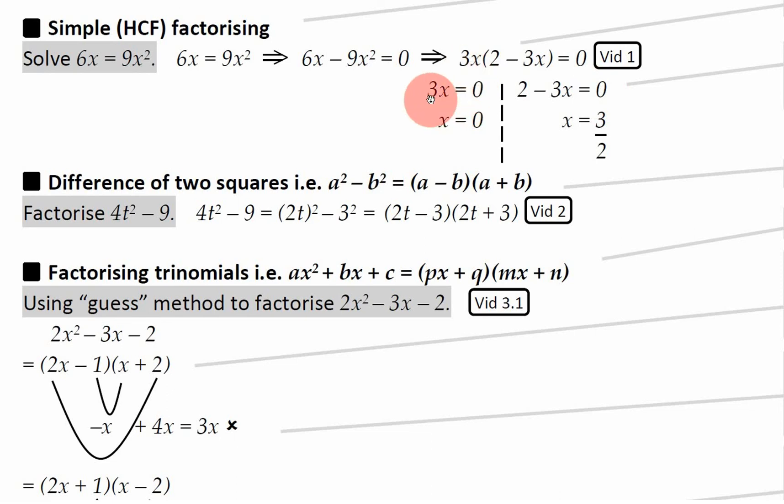So basically if you've got 3x equals 0, then that means x is equal to 0. That's one solution. And if 2 minus 3x is equal to 0 instead, well rearranging that gives you x equals 3 over 2 or 1.5. So basically here are the two answers which are both correct, which should both be used in the exam when you're solving a quadratic equation like this one.